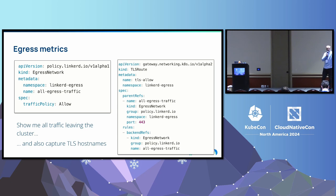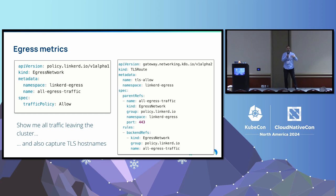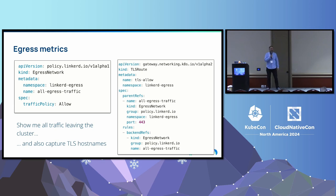Q: You put ingress on the roadmap — can you elaborate on that? A: I would like to take Linkerd's functionality and extend it to handle traffic coming into the cluster. We've been ready for a while — we've got the Gateway API, which is describing the future of ingress. It's really just plugging those two things together. Throw away your old ingress controllers — Linkerd is here, at some point in the future.